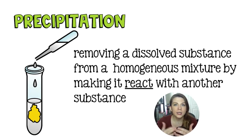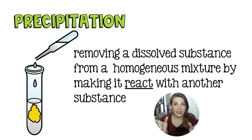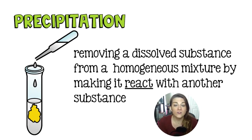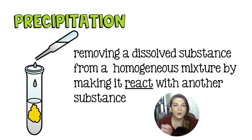In a double replacement reaction you have components AB and CD. They swap partners, so A is no longer bonded to B — it bonds to D instead. When this happens, either AD or CB will be insoluble, forming a solid that sinks to the bottom of the container. We strategically choose our chemicals because the goal is to pull one ion out of solution by bonding it to something else.